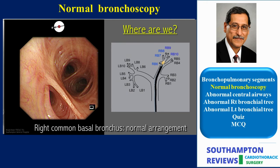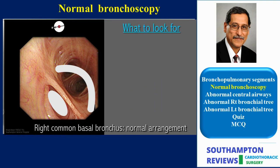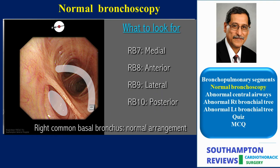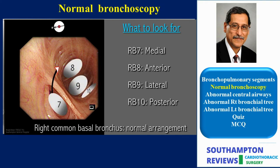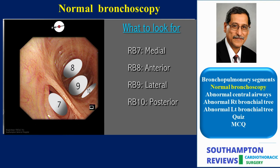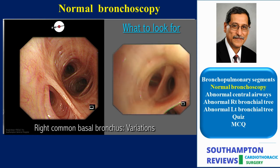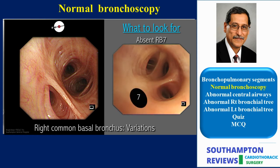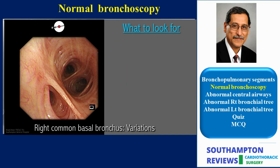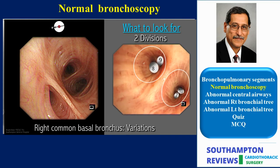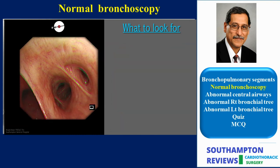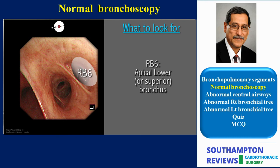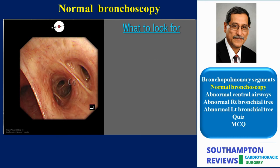One should expect a crescent of three orifices separated by a sharp carina from a single orifice facing its concavity. These four orifices are named in clockwise order as medial basal, anterior basal, lateral basal, and posterior basal. Divisions of the common basal segments show great variation, the commonest being absence of RB7 and two sets of double divisions. On proximal withdrawal of the scope, the takeoff of the apical segment RB6 should be seen, separated by a sharp quaternary carina from the common basal segments. This concludes examination of the right side of the tracheobronchial tree.